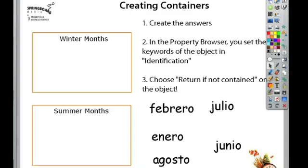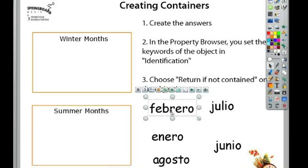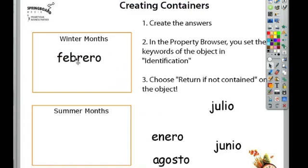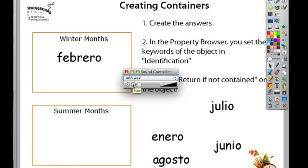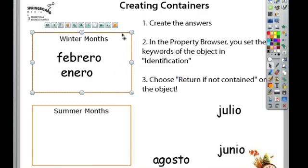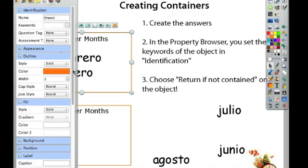You can also create containers that use keywords. So here you can see I have two different boxes, one for winter months and one for summer months. And then I have a bunch of Spanish words for months over here on the right. So which words fit where? Guerrero is a winter word. Julio and Enero are winter words. Let's take a look at how I set this up. First we're going to select the container and go over to our browsers and take a look at the properties.